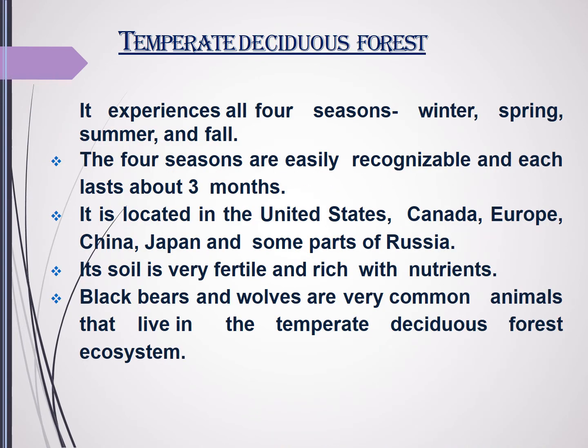Next are the temperate deciduous forests. All four seasons can be experienced here — winter, spring, summer, and fall — and each is recognizable and lasts about three months. This ecosystem can be seen in the United States, Canada, Europe, China, Japan, and some parts of Russia.